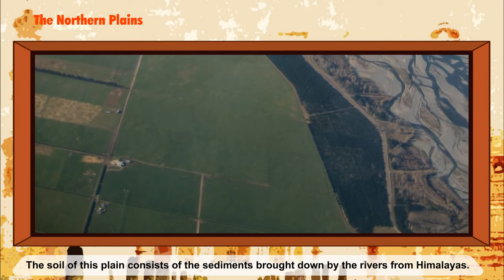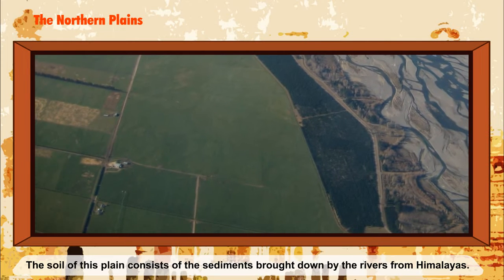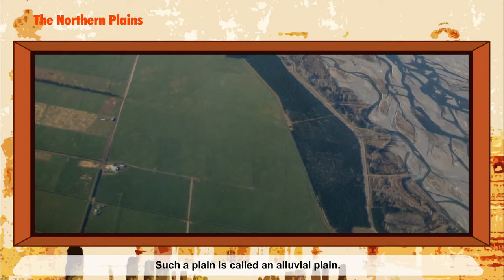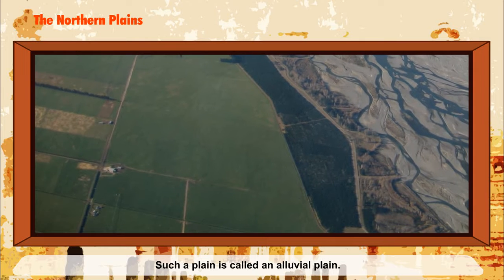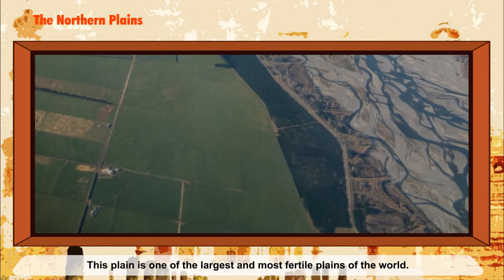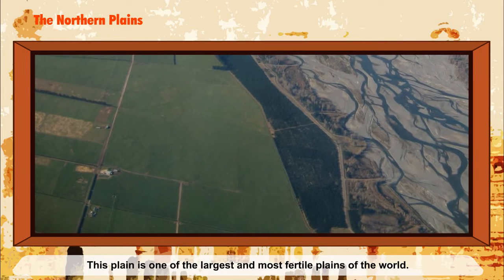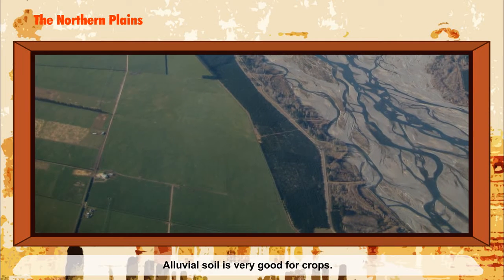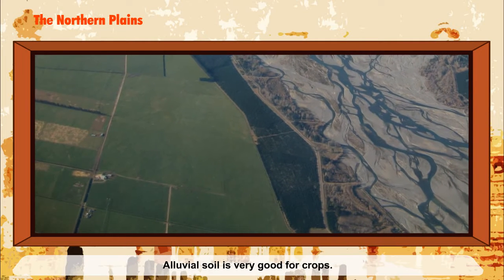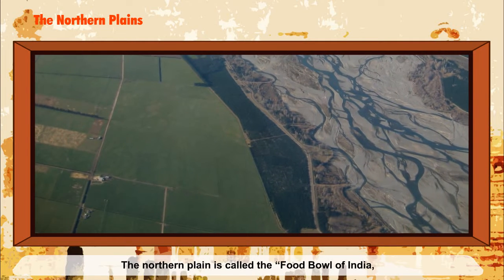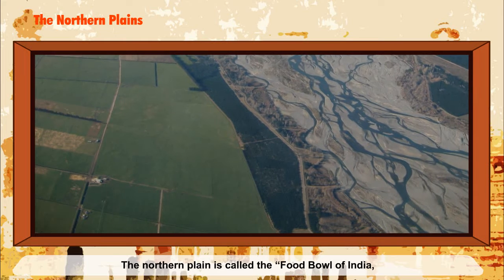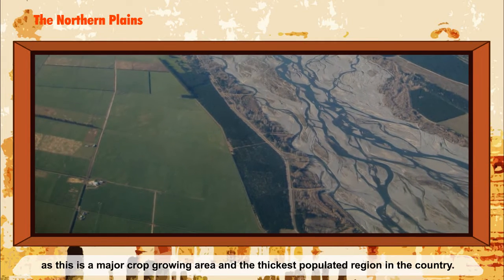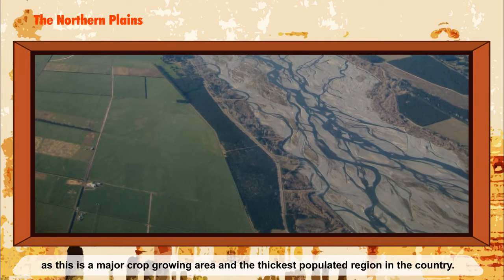The soil of this plain consists of sediments brought down by rivers from the Himalayas. Such a plain is called an Alluvial Plain. This plain is one of the largest and most fertile plains of the world. Alluvial soil is very good for crops. The Northern Plain is called the Food Bowl of India, as it is a major crop-growing area and the most thickly populated region in the country.